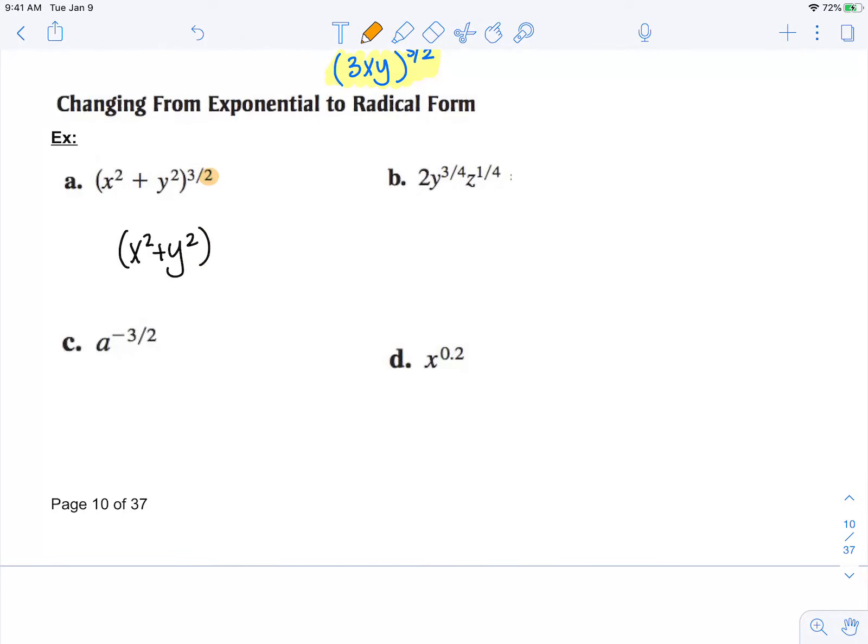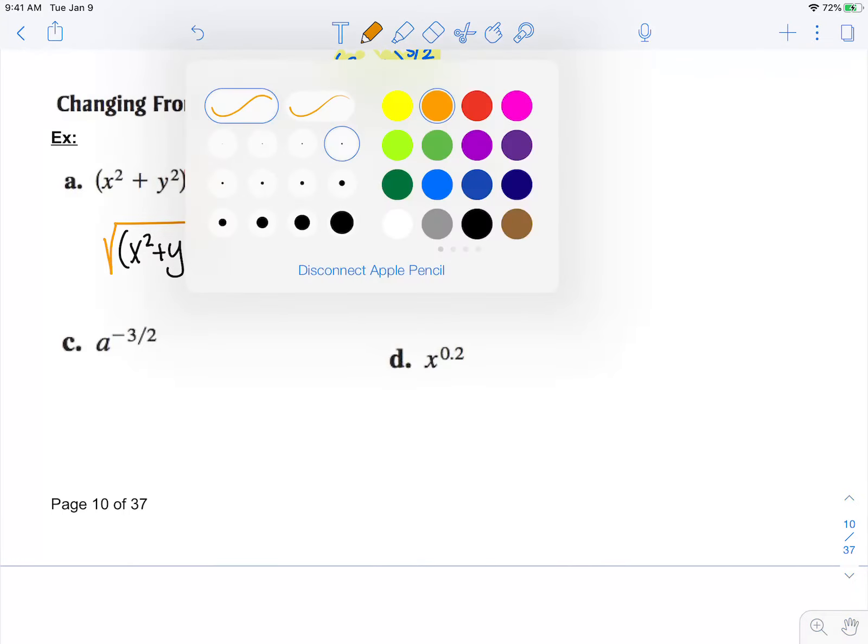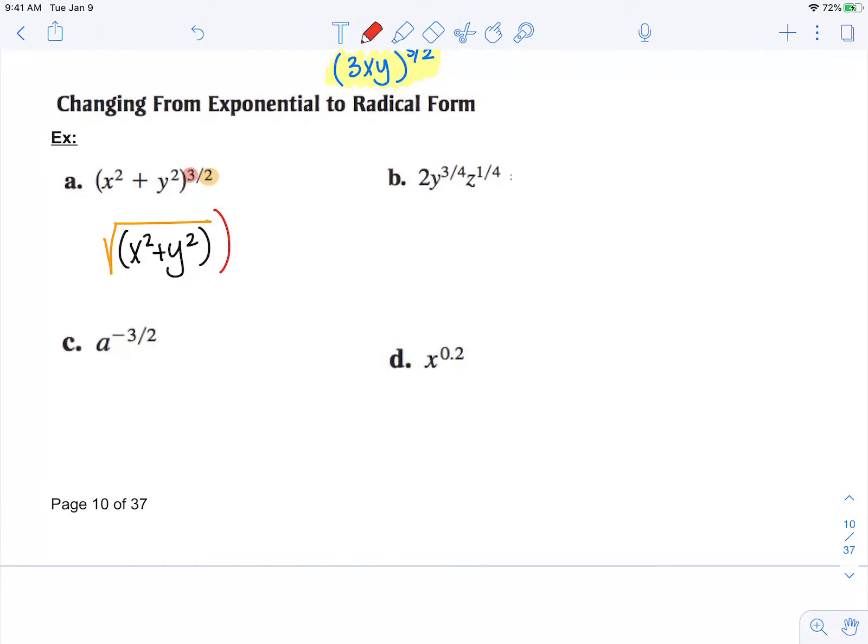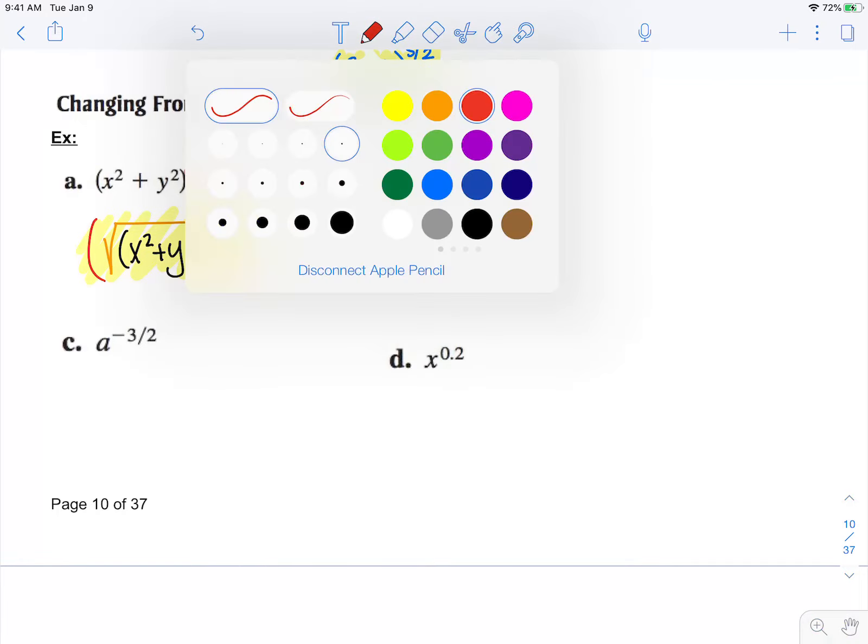So this is going to be square root, and the numerator of my exponent is always the power, so that'll be cubed. In part b, we have two things going on with power, so let's focus on them one at a time.